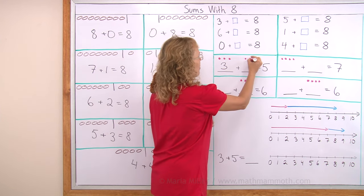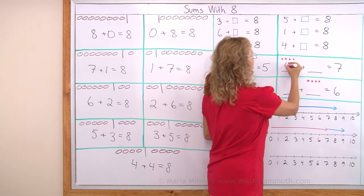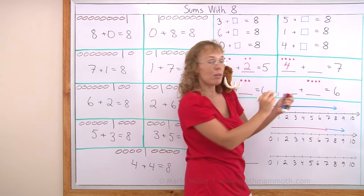2 more. Right. 3 plus 2 makes 5. And then here is 4 lingonberries and how many more to make 7?